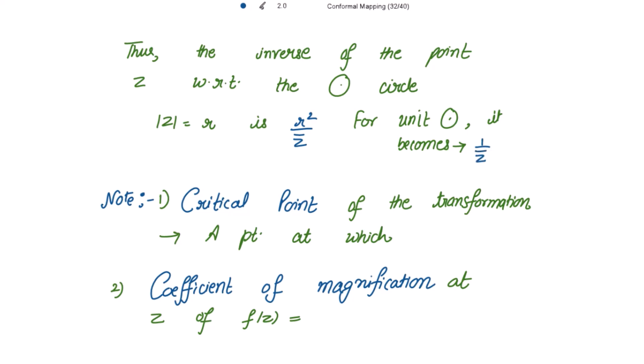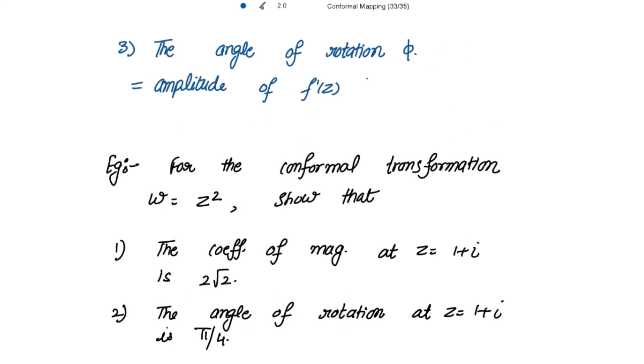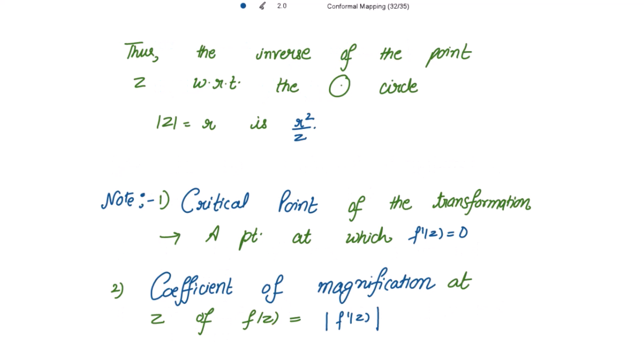Key definitions: the critical point of a transformation is a point at which f'(z) = 0. The coefficient of magnification at z of f(z) is |f'(z)|. The angle of rotation φ is equal to the amplitude (argument) of f'(z).